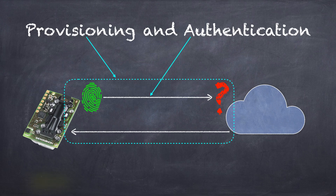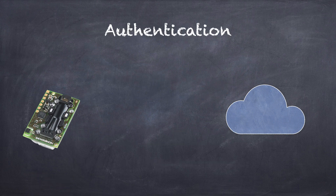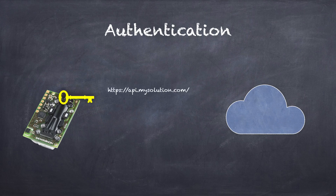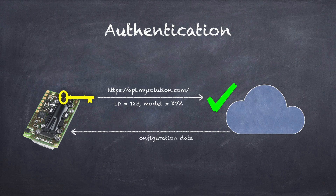Authentication is part of that process where only devices that present the proper credentials can be registered. The exact details of this process can vary widely based on implementation. However, in most applications, the device being deployed is loaded with a certificate or key stored in a secure memory area that identifies it as authentic, and it knows the server URL to connect to in order to enroll itself. When the device is first plugged in and connected to the local network, it calls home, and then based on the credentials and other information such as the model and serial number, it might receive further configuration data.